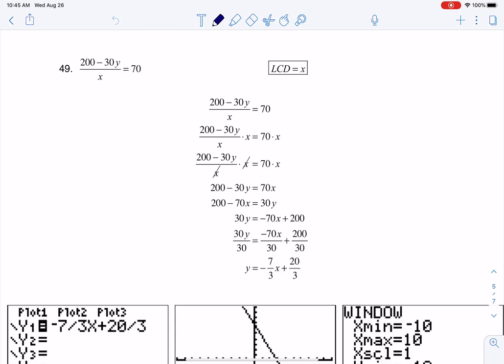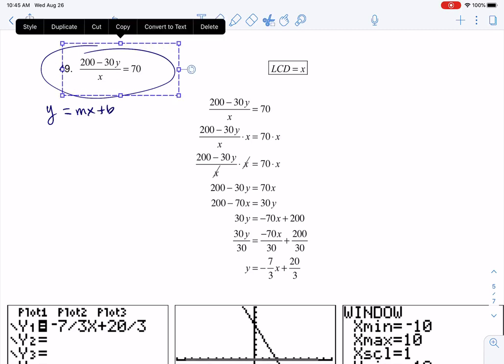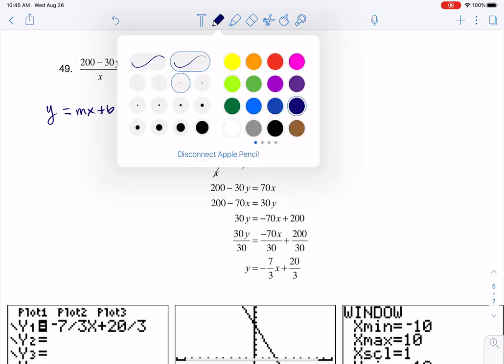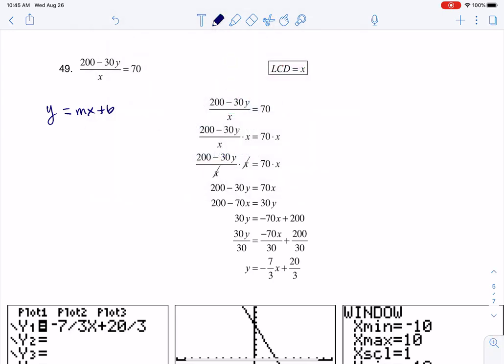So the first thing they want us to do is get this equation in slope intercept form and slope intercept form means I need y equals mx plus b. So there's a few ways you can do this but in general when I see a fraction like this and I want to get rid of it, I'm going to multiply both sides by the LCD or the least common denominator and that's x.